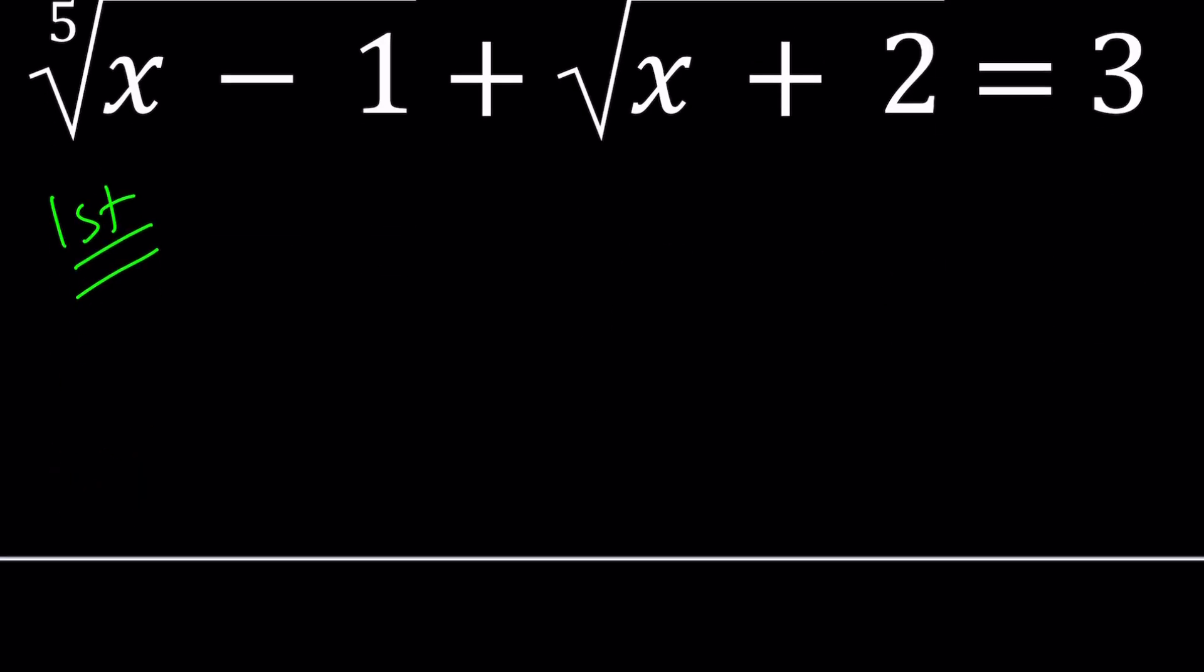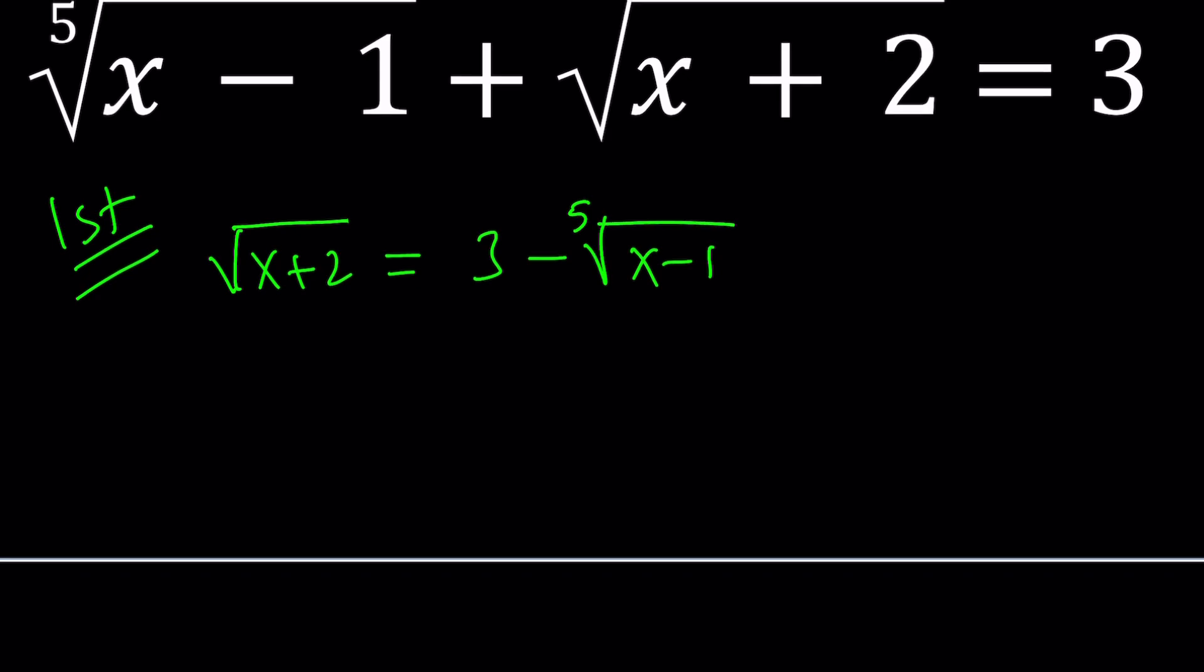Now I'm going to be trying a couple different ways, so let's start with the first method. I want to isolate one of the radicals, so let's isolate the square root, and then of course, this is going to be followed by squaring both sides. So if you square both sides, on the left, we're going to get x plus 2. On the right-hand side, we have a minus b quantity squared. It's going to look like 9 plus the fifth root of x minus 1 squared minus 6 times the fifth root of x minus 1. So this stuff is too complicated because of the fifth roots.